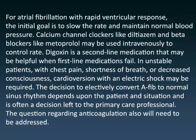For atrial fibrillation with rapid ventricular response, the initial goal is to slow the rate and maintain normal blood pressure. Calcium channel blockers like diltiazem and beta blockers like metoprolol may be used intravenously to control rate. Digoxin is a second-line medication that may be helpful when first-line medications fail.